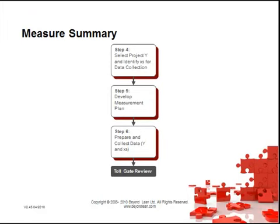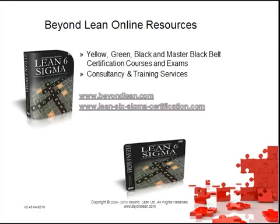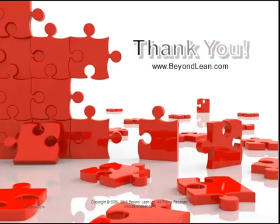In summary, we've gone through step 4 — selecting your project Y and identifying inputs for data collection — developing the measurement plan, preparing and collecting the data, and then going to the tollgate review. Other resources you can find online include yellow, green, black and master black belt certification courses and exams, all fully accredited from Beyond Lean Limited, a registered training and consultancy company in the United Kingdom. You can find more information at beyondlean.com or leansixsigmacertification.com. Thank you.